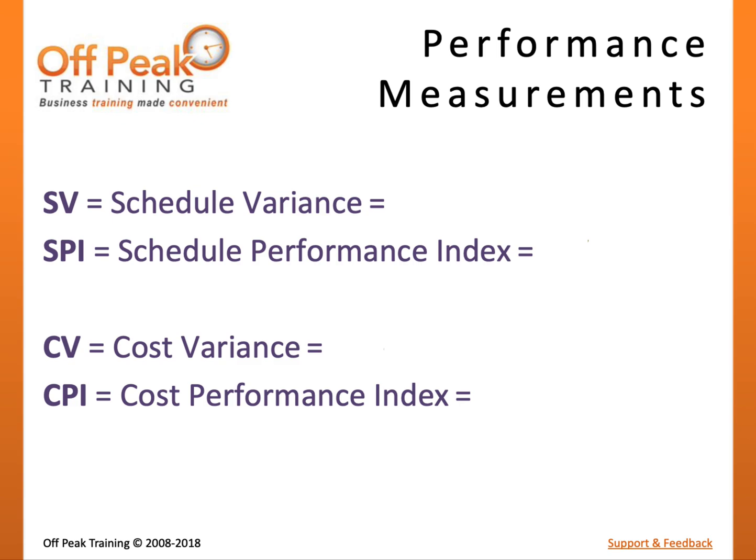Once we understand where we should be — represented by Planned Value — where we are — represented by Earned Value — and the cost of our achievement — represented by Actual Cost — we can measure our project performance. In Earned Value Management, four work performance measurements will be used. Schedule Variance and Cost Variance can be used to understand current performance in dollars. The Schedule Performance Index and Cost Performance Index are used to understand a ratio of overall project budget. We will use three simple steps to learn the formulas of these four measurements.